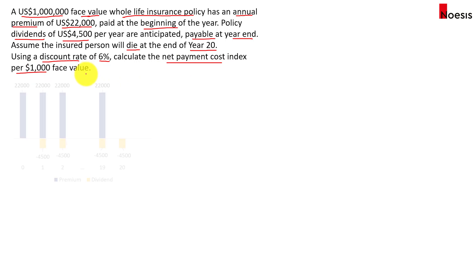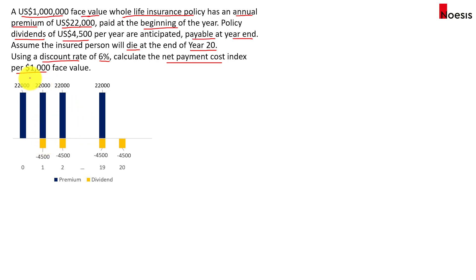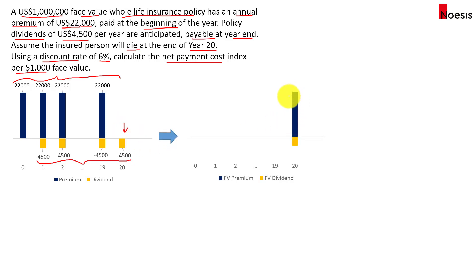Looking at the timeline: the premium is payable immediately for 20 years, from now until year 19, giving 20 payments altogether. The dividends happen at year end, starting from year 1 until year 20. We want to offset the premiums against the dividends, but the timing of the cash flows are different, so we'll calculate the future value of the premiums and future value of the dividends to year 20, giving a single cash flow for each.